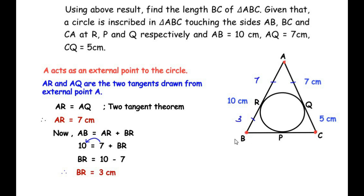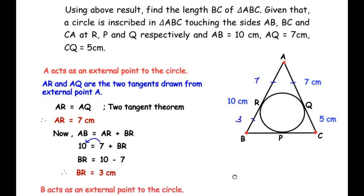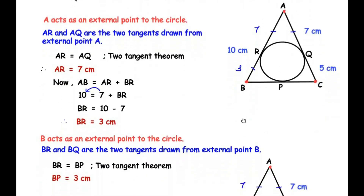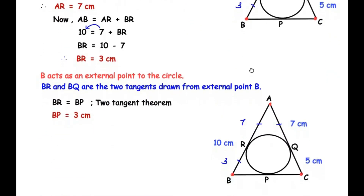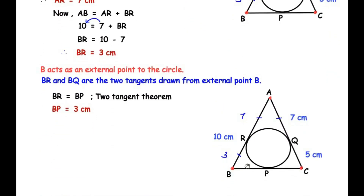Next, focusing on external point B: B acts as an external point to the circle, and the two tangents from B are BR and BP. So the length of BR equals the length of BP by the two tangent theorem. Since BR is 3 cm, the length of BP is also 3 cm.